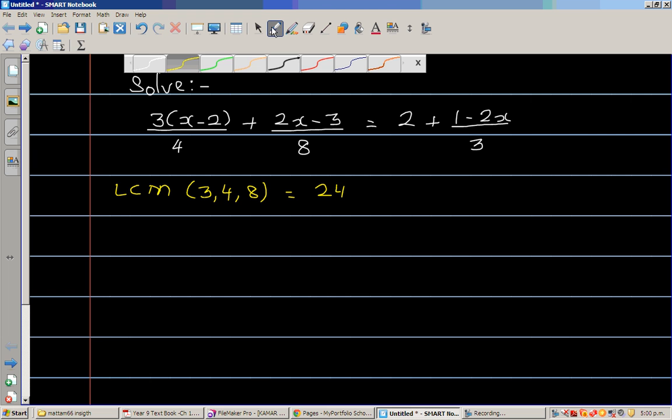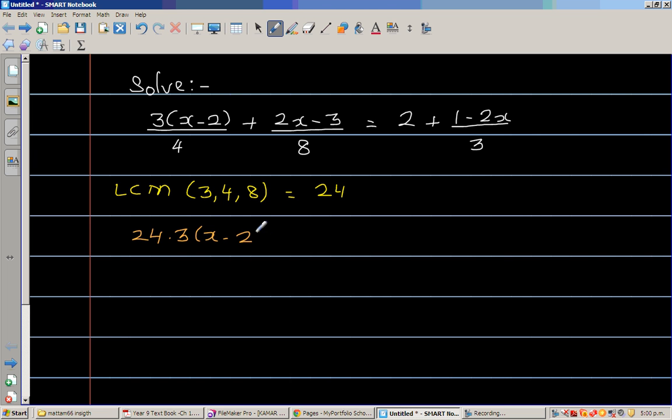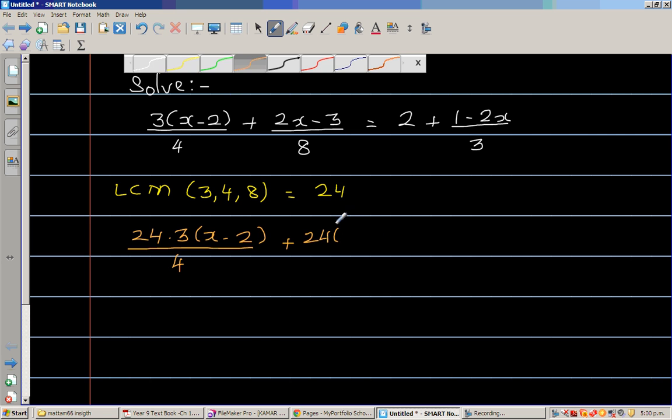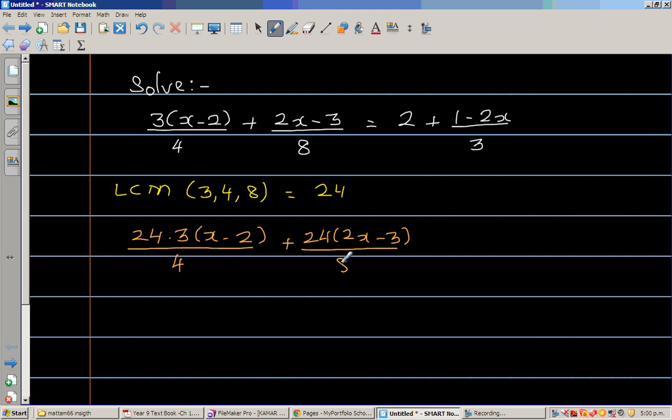So what I'm going to do next is I'm going to multiply each of the numerator by 24. So it is 24 times 3 times x minus 2 over 4 plus 24 times 2x minus 3 over 8 is equal to 24 times 2 plus 24 times 1 minus 2x over 3.